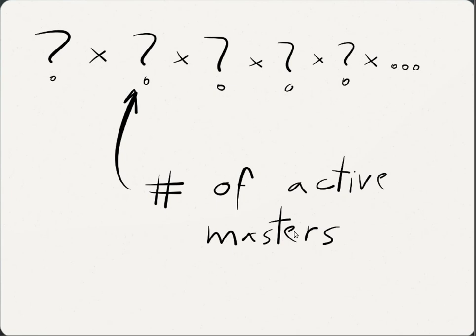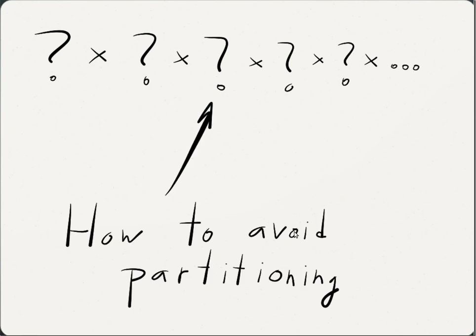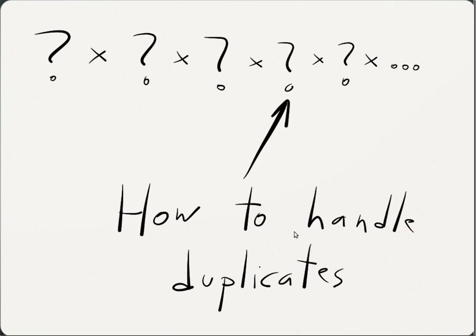We also need to decide how to avoid the partitioning of the nodes into subsets that cannot communicate with each other. How to handle duplicates caused by the star redundancy.